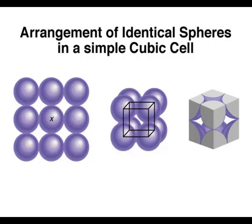Here is an arrangement of identical spheres in a simple cubic cell. Notice that in the corners of the unit cell, there is one-eighth of an atom.